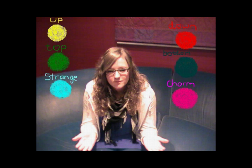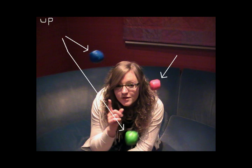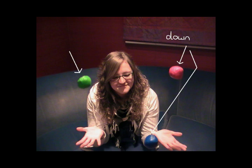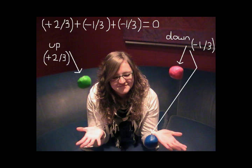Quarks can exist as six different species: up, down, top, bottom, strange and charm. A proton is made up of two up quarks and one down quark, which gives it an overall charge of positive one. The neutron is made up of two down quarks and one up quark, which gives it an overall neutral charge of zero.